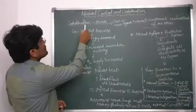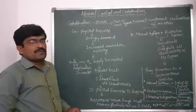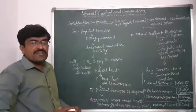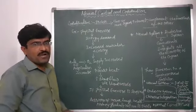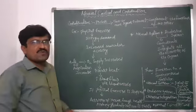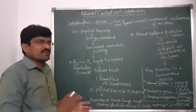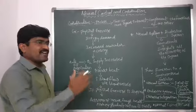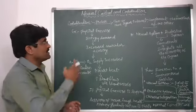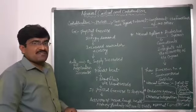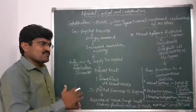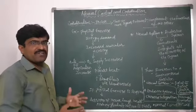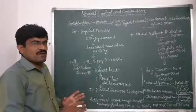First, the structural and functional unit of the nervous system is the neuron. The neuron plays a major role to transmit signals from one area to another area. The entire nervous system in our body transmits signals through neurons from one area to another.